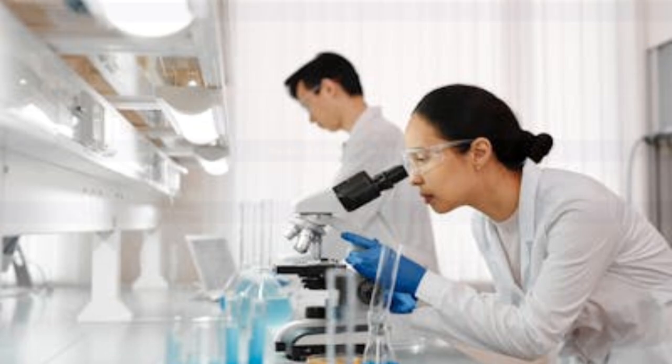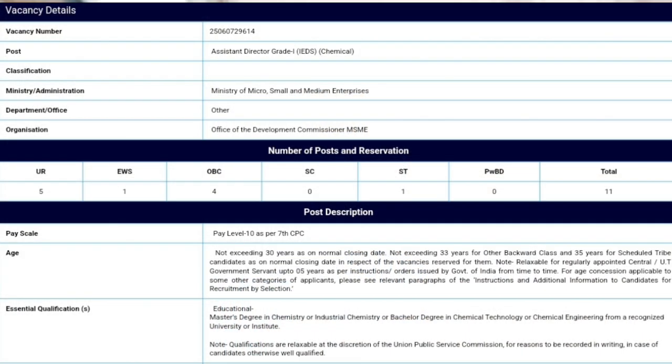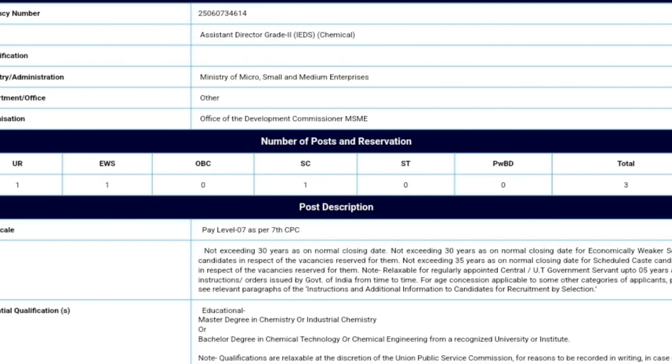Assistant director grade 1 chemical has 11 vacancies and assistant director grade 2 chemical has 3 vacancies. Both these vacancies are under the Ministry of MSME.